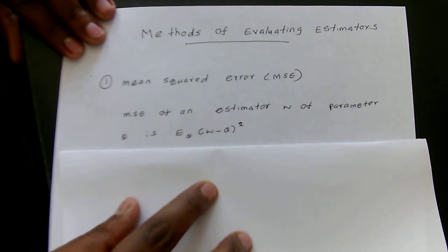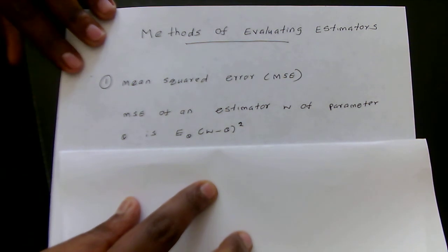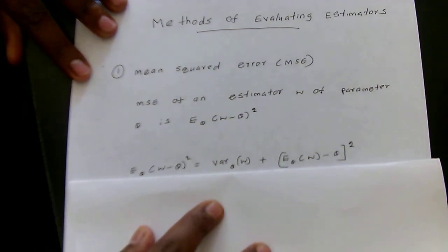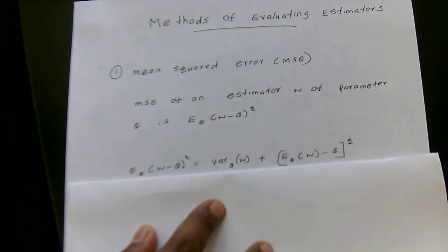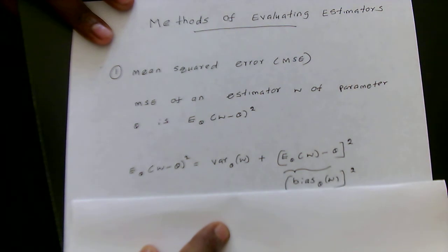We define the mean squared error of an estimator W of parameter theta as the expected value of the squared difference — that is, the expectation of (W minus theta) squared. It can be shown that this expected value is equal to the variance of that estimator plus a second term, which is the expected value of that estimator minus theta, squared. This second term is called the squared bias of that estimator. So this is the formula for finding the mean squared error of a particular estimator.